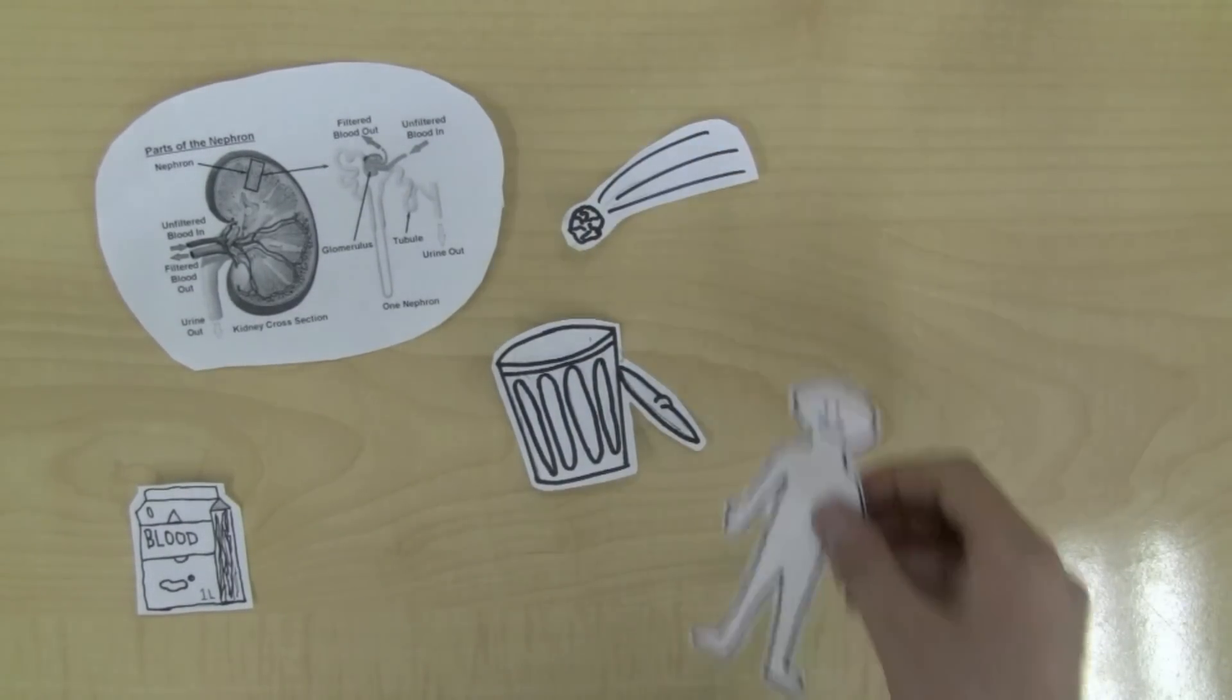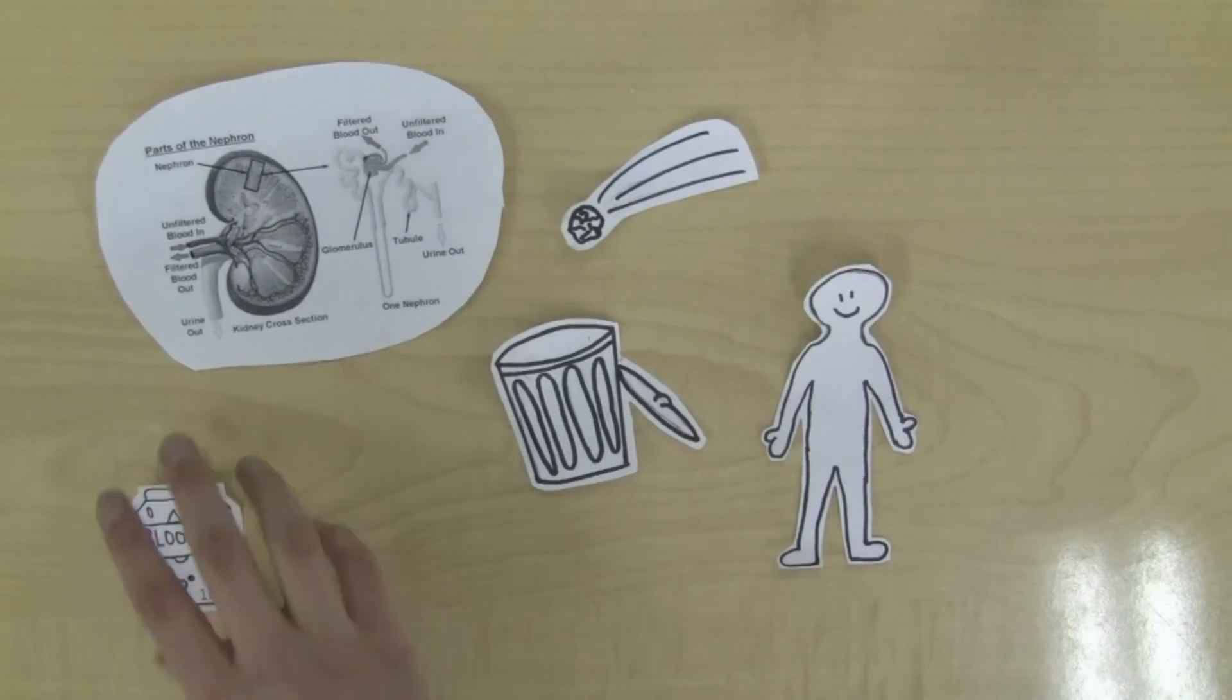In the average human body, there are about 800,000 to 1.5 million nephrons.